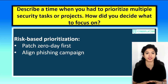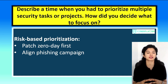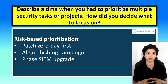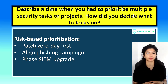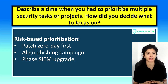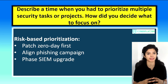Next, I scheduled a phishing campaign to align with our quarterly training window so it wouldn't disrupt operations. Finally, I planned the SIEM enhancement as a phased project starting with high-value log sources. As a result, we quickly mitigated the highest risk vulnerability, maintained our security awareness schedule without any delays, and successfully rolled out the SIEM upgrade the following month. This structured risk-based prioritization ensured we protected the business without overwhelming teams or missing deadlines.